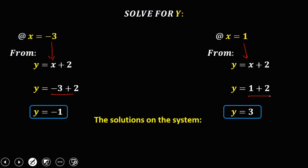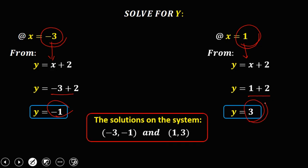So the solution now on the system, so if x is negative 3, y is negative 1. And if x is positive 1, y is positive 3.